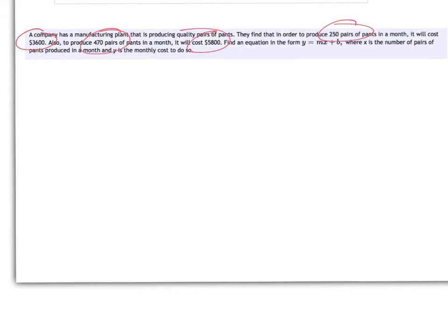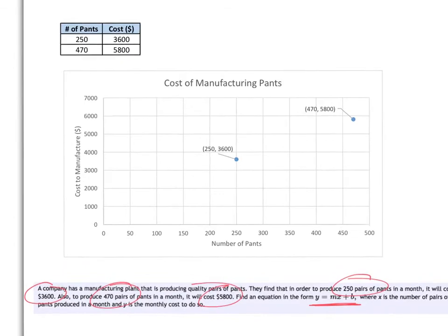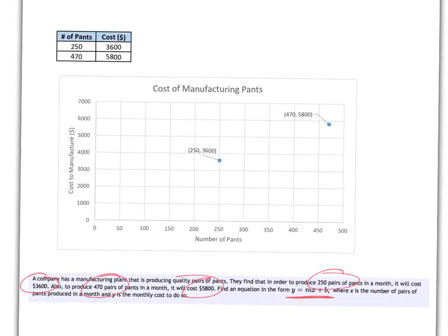We are asked to find a linear model in the form Y equals MX plus B where X is the number of pairs of pants and Y is the monthly cost for the company. A beautiful way to look at this is to graphically represent this information. So here is a table and a graph for this.